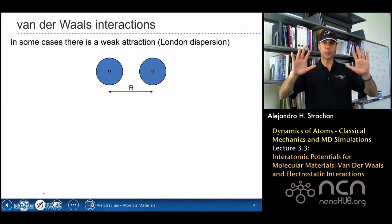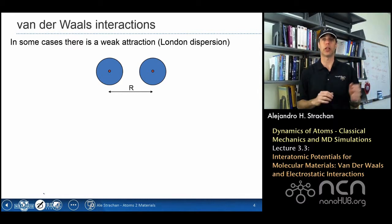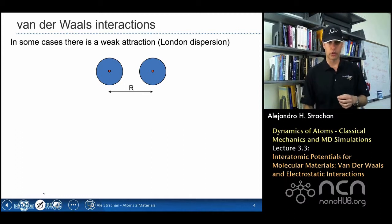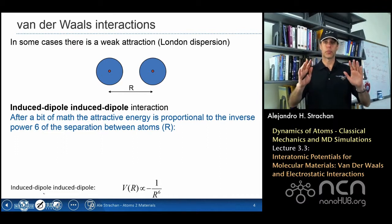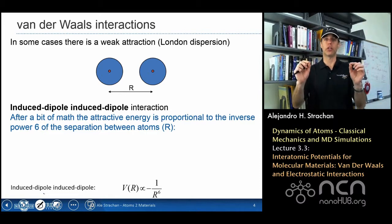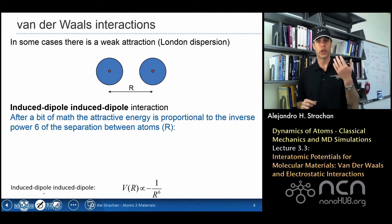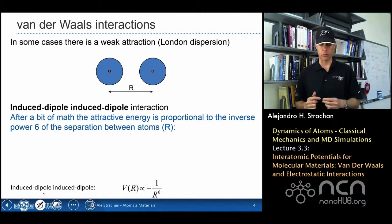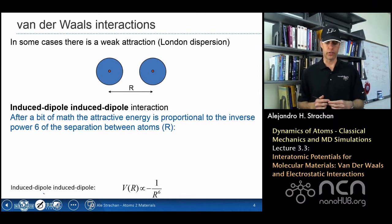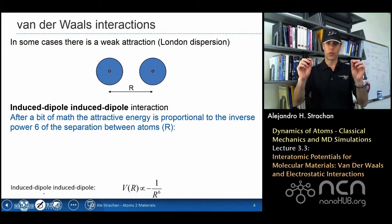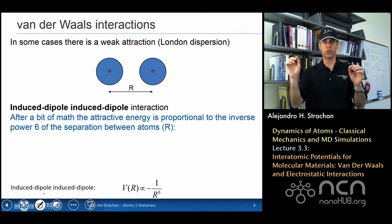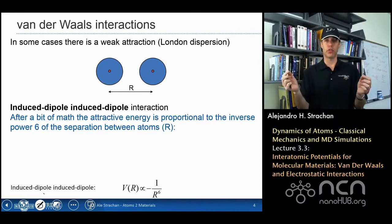It's a time dependent phenomena, its origin is the time dependent oscillation of the electronic charge around the nucleus, and if you do a little bit of math about what's going on, you're going to see that the effective interaction between these two atoms decays as 1 over r to the power of 6, so inverse power of 6 of the distance between these atoms. And the Ashcroft-Mermin book on solid-state physics has a nice derivation of this relationship.